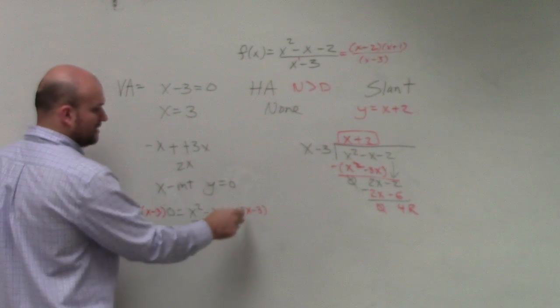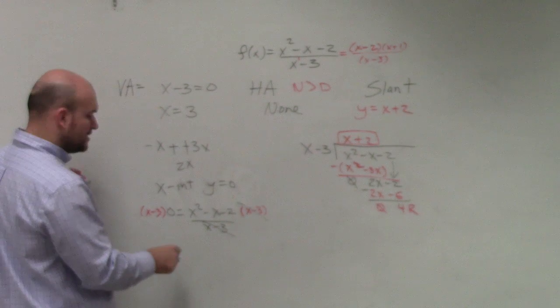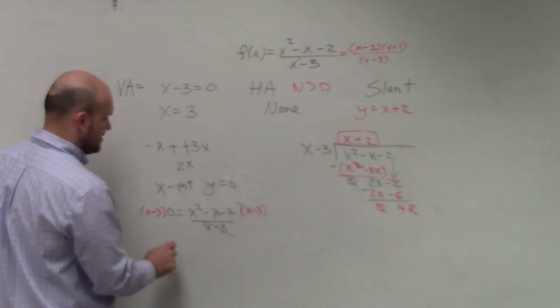OK, well, x minus 3 divides with x minus 3, and x minus 3 times 0 is just 0. Now, so basically, when you're finding the x-intercept of a rational expression, you're going to do this every time.